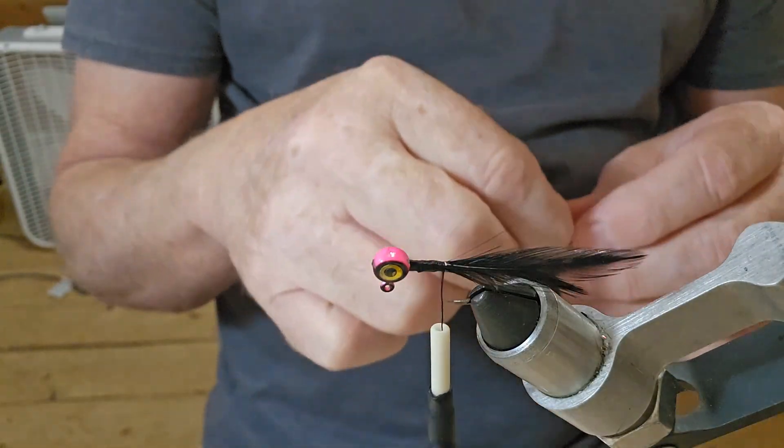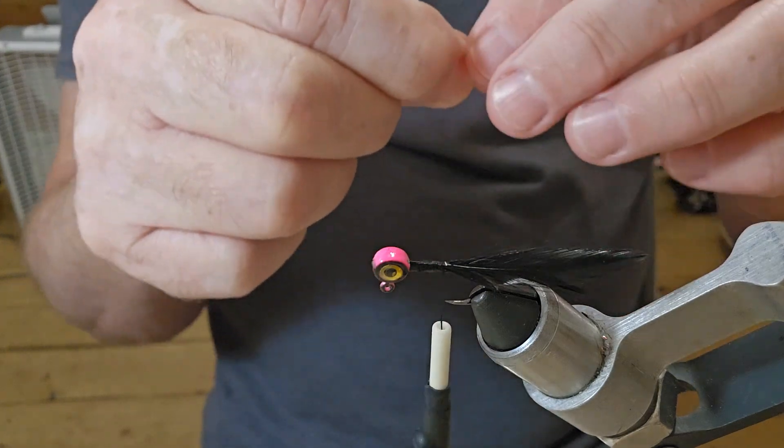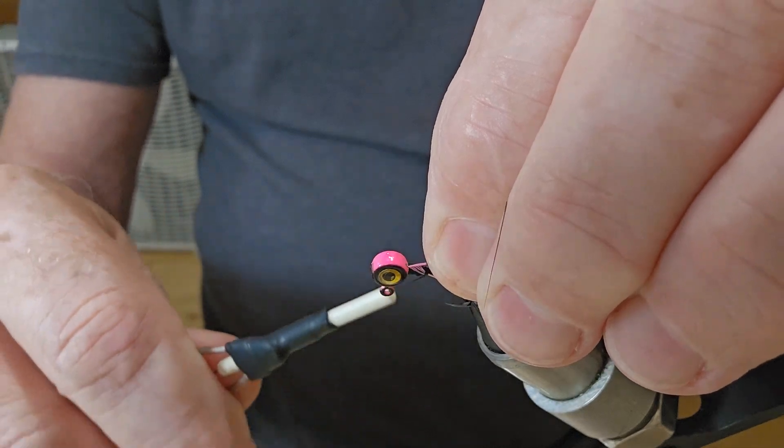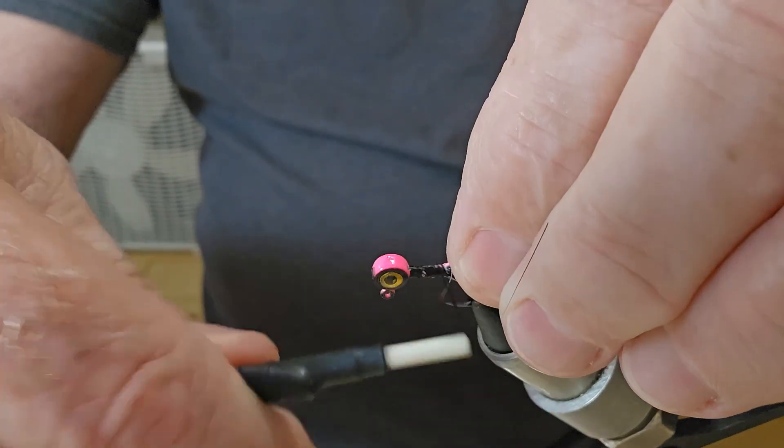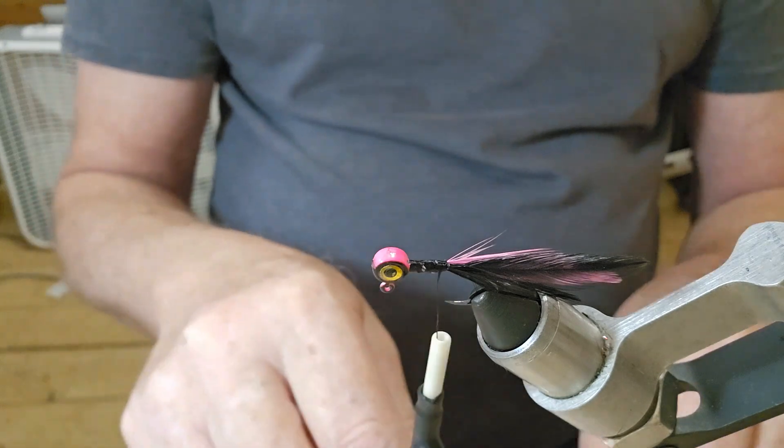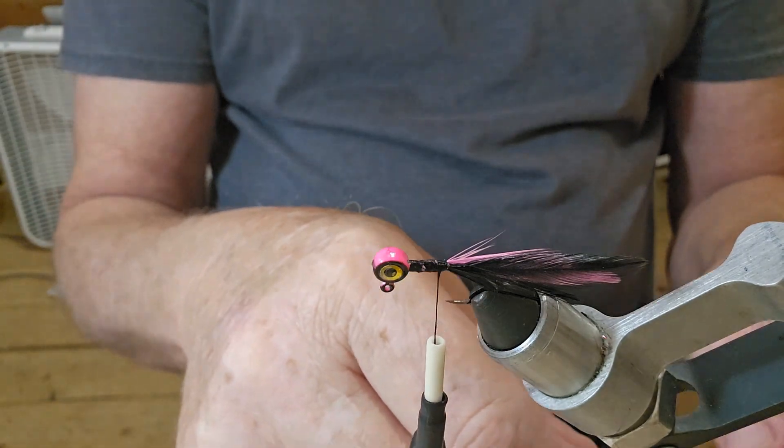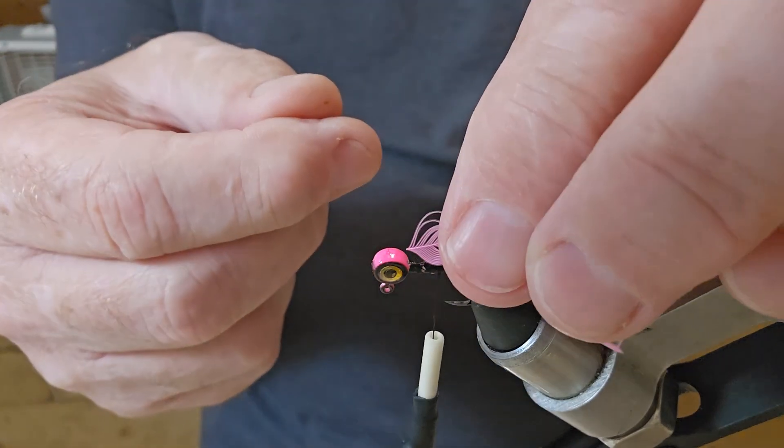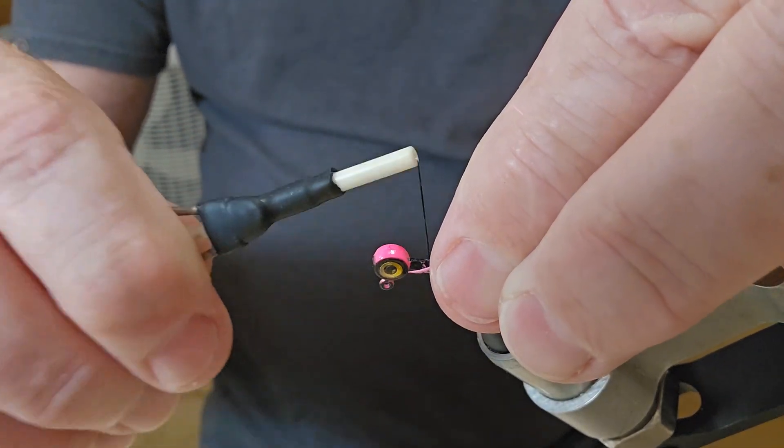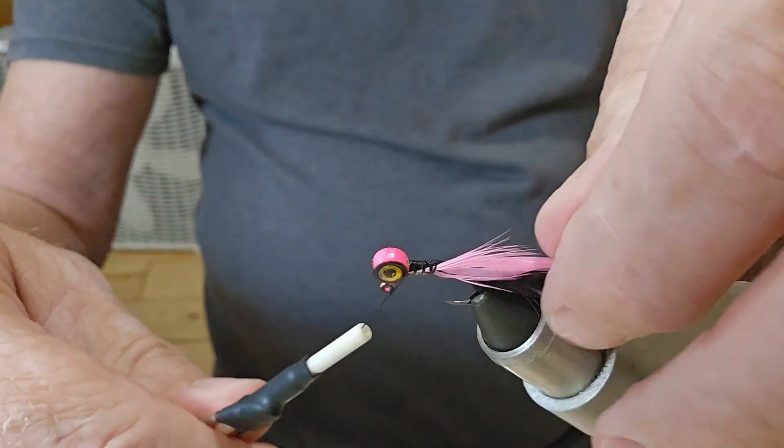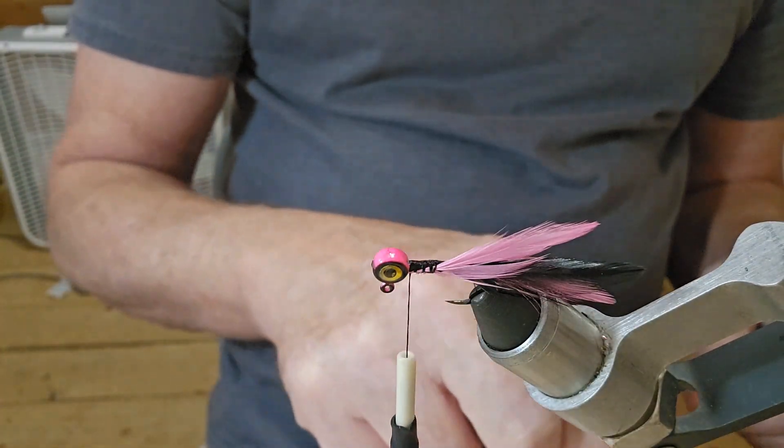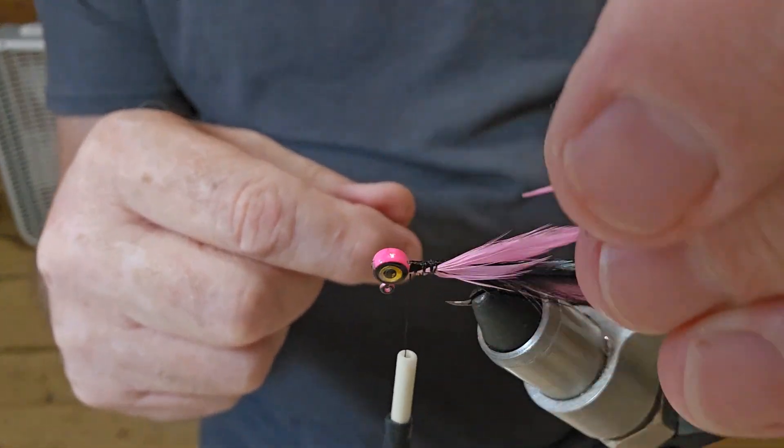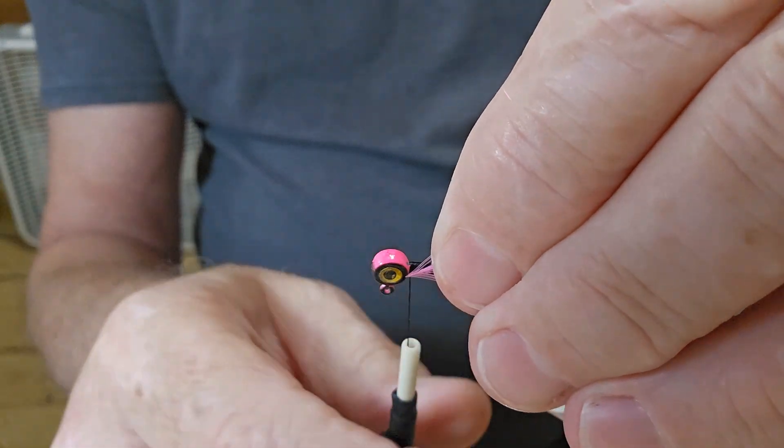And now we'll get our pink. We're going to tie all these right on top just to keep our pink hackle up where the pink part of the jig head is, or try to. And I've got one more here. I'm going to tie in right over here.